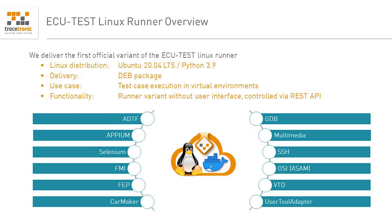The delivery contents of the runner will include a Debian package, the user help, and a set of instructions. The instructions will support the user in setting up a Docker container which can then execute the runner. At this time we will support the Ubuntu version 20.04 LTS.